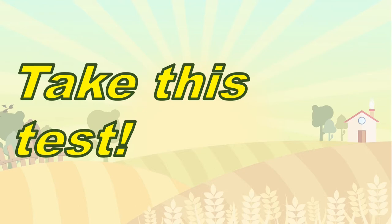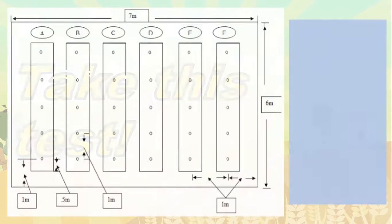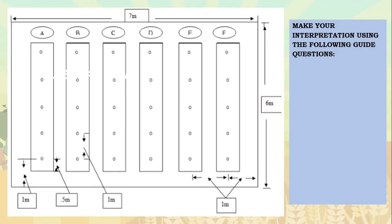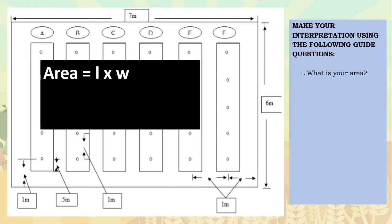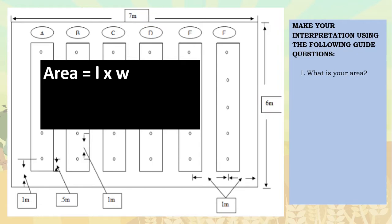In order to determine our basic knowledge and calculation, let's take this test first. We have a sample plan for our garden. The formula to get the area is length times width. We have 7 meters for the length and 6 meters for the width, so we multiply these two and we get 42 square meters. That's the answer for question number 1.